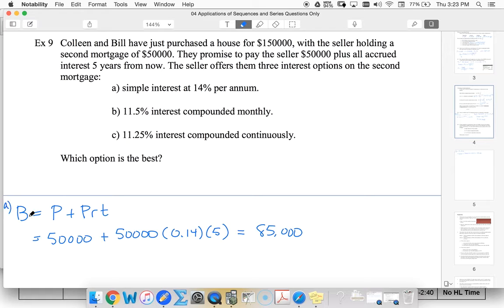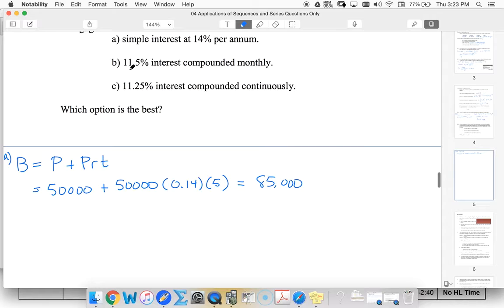Now let's look at monthly compounded interest at 11.5 percent. Balance equals P times one plus our interest rate. So 11.5 percent divided by - oh, compounding monthly - so divided by 12. That's 12 times per year. Over five years, we compound 60 times.